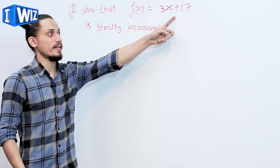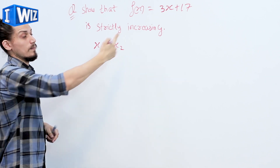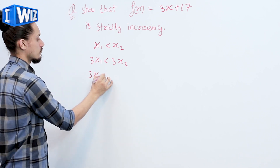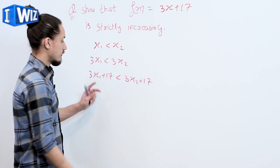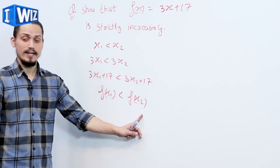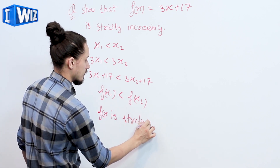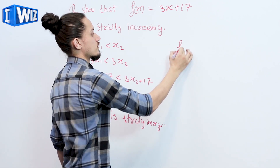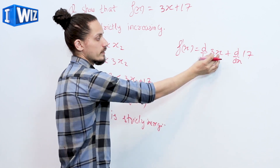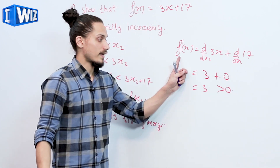We are given f(x) equals 3x plus 17, and we have to prove it is strictly increasing. By the first method: if x1 less than x2, multiplying by 3 gives 3x1 less than 3x2, and adding 17 gives 3x1 plus 17 less than 3x2 plus 17, that is f(x1) less than f(x2), so f is strictly increasing. By the second method, f'(x) equals d/dx of (3x plus 17) equals 3, which is greater than 0, so f is strictly increasing.